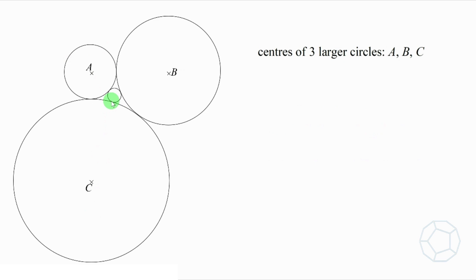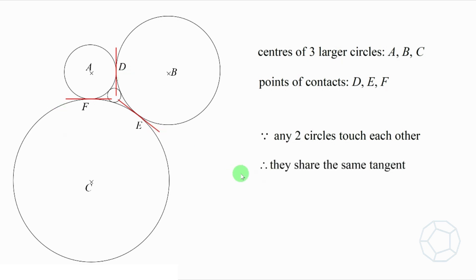To start with, we denote the centers of the three larger circles by A, B and C. For the points of contact, we call them D, E and F. Is there any relation between these six points? Let's check it out. Because any two circles touch each other, therefore they share the same tangents at the points of contact. They are the three red lines in the figure.